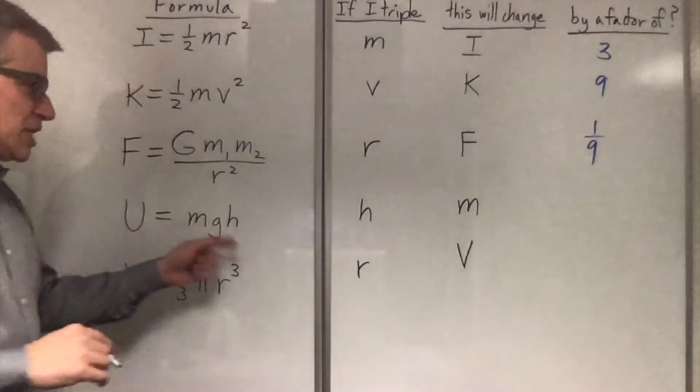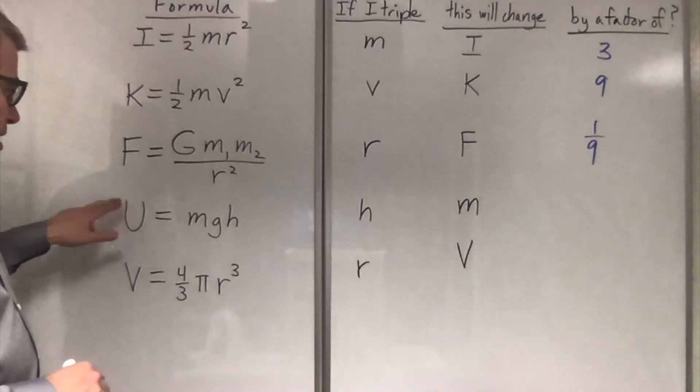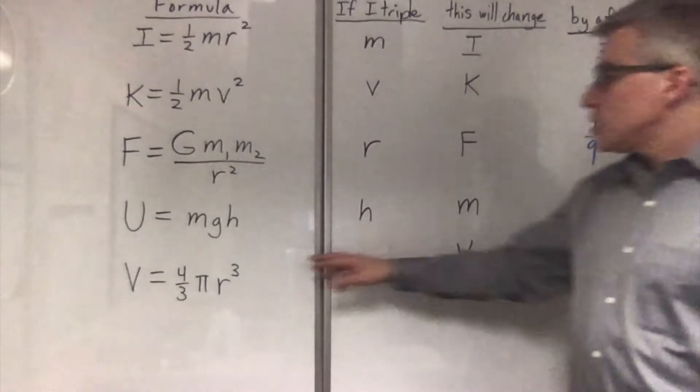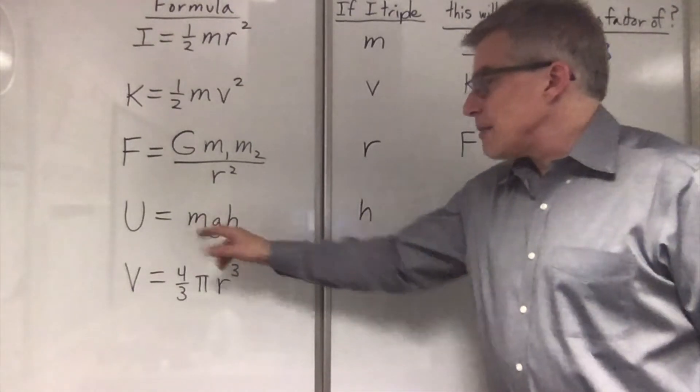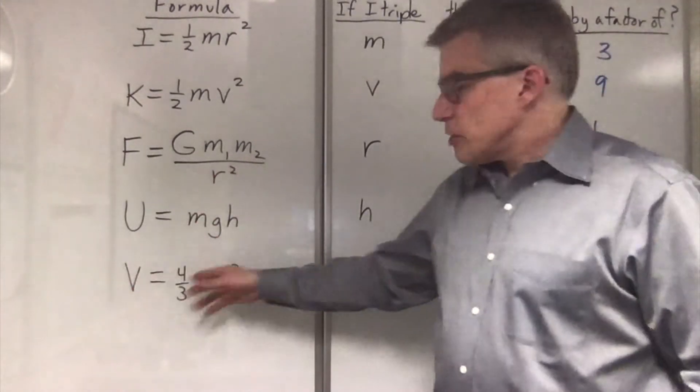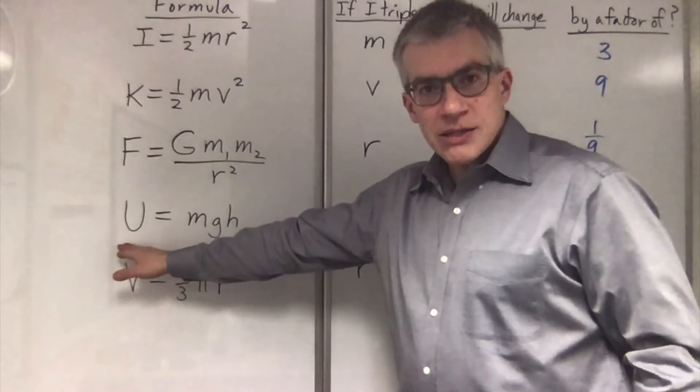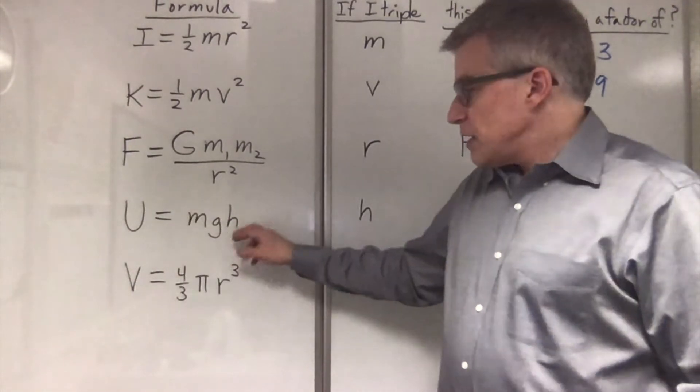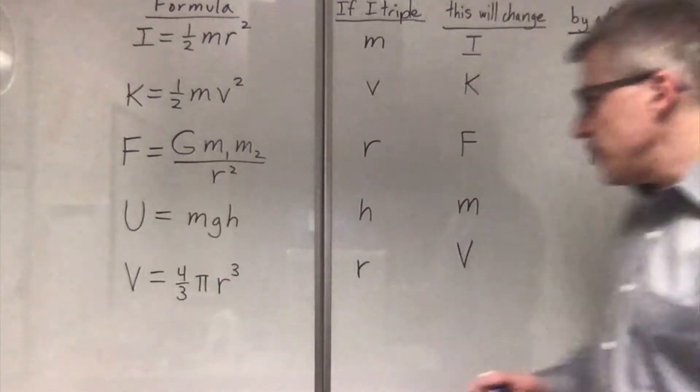U equals mgh. So let's mix it up a little. Let's say that u is going to be held constant this time. If we triple h, what happens to m? Well, the m isn't solved for here, but we can tell that if this is going to equal a constant, and part of it goes up, another part has to go down. If the h triples, the m has to become 1 third.